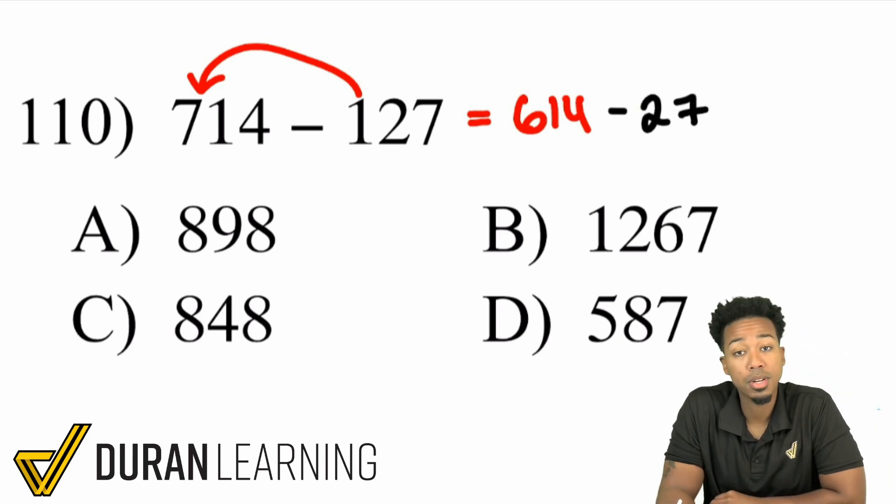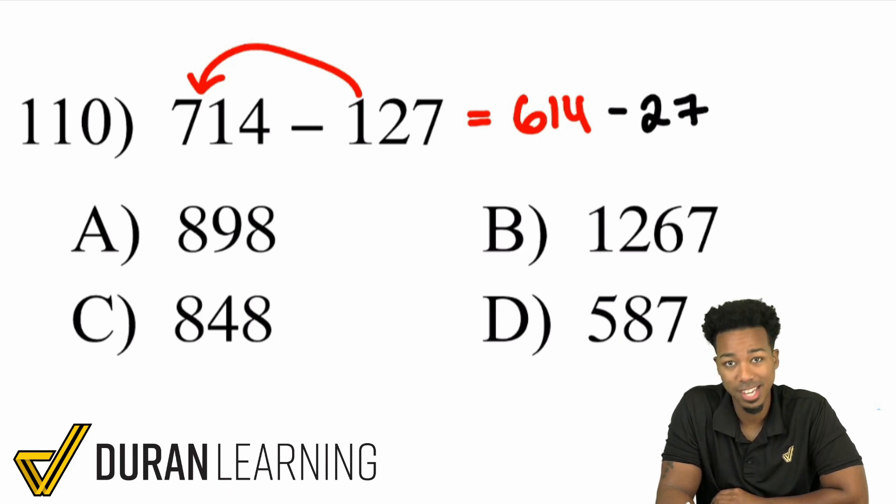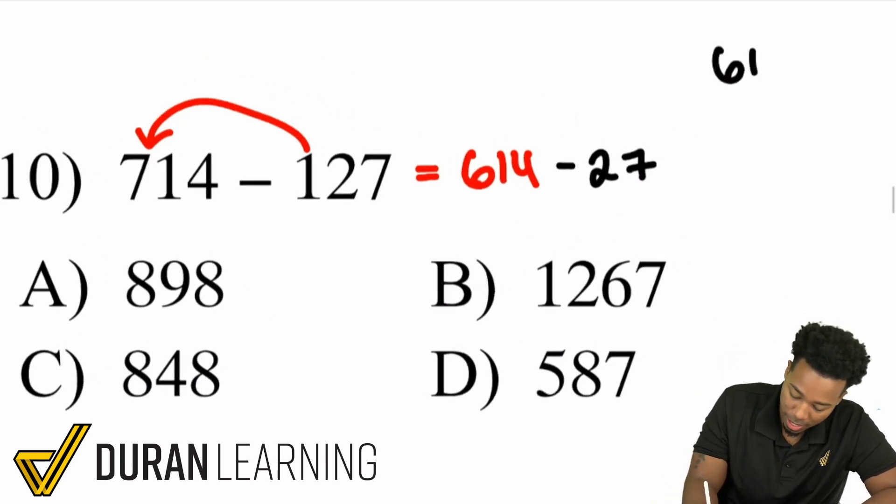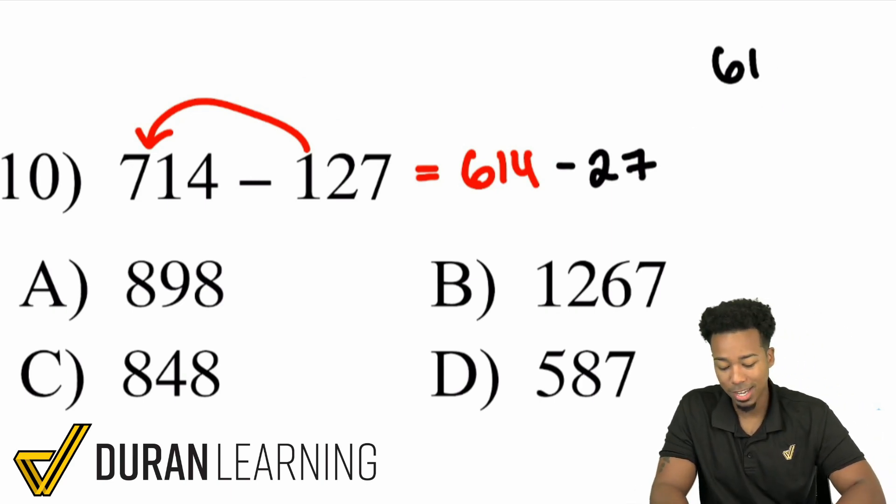Okay now from here here's what we can do. What we can do to give ourselves an easier time with this one is notice how far away 14 is away from 27. I don't want to sit here and write this down and borrow you know and borrow all these numbers. It's going to take way too long. I do not want to do that.